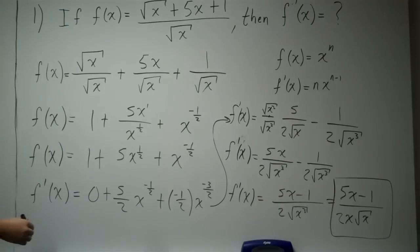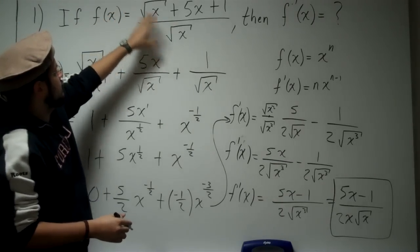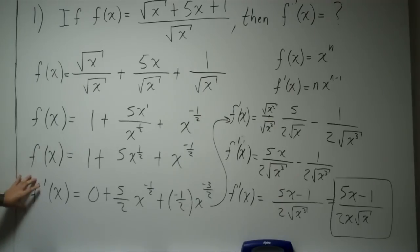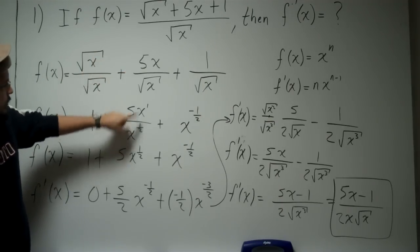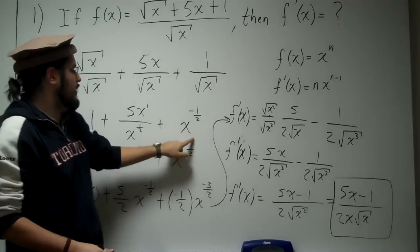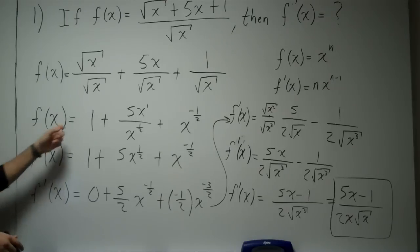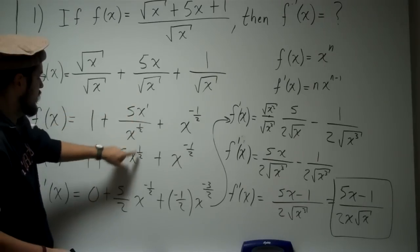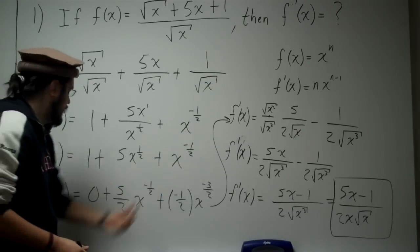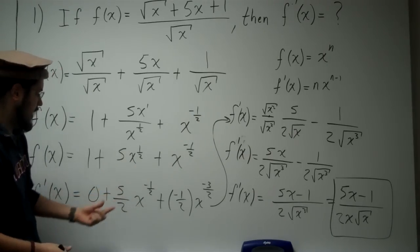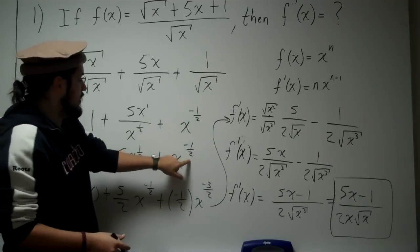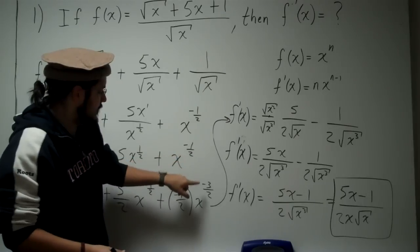So I approached this problem by taking the fraction and splitting it up into three fractions. Then I did some algebra — the calculus wasn't done until later. I expressed the square root of x in exponent form as x to the 1 half, moved the denominator term up to get x to the negative 1 half, subtracted exponents to get 5x to the 1 half, and then applied the power rule to take the derivative of each term — getting 0, then 5 halves x to the negative 1 half, then negative 1 half x to the negative 3 halves.